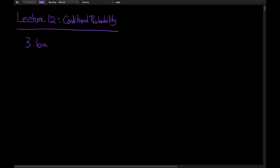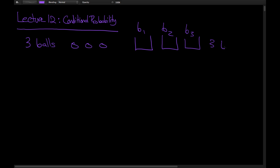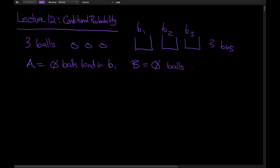Let's say we were tossing three balls into three different bins — bin one, bin two, and bin three. We're going to toss three balls into these bins. Suppose there's an event A, which is that zero balls land in bin 1, and another event B, which says that zero balls land in bin two.